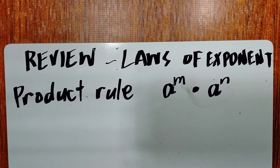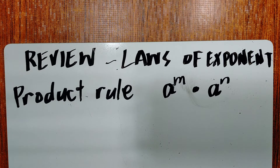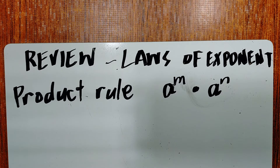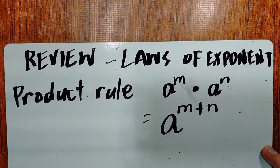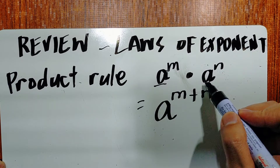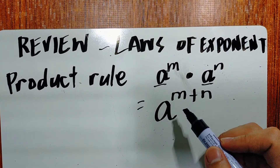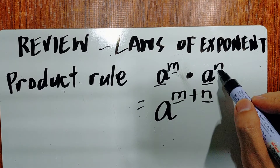Before we proceed with zero and negative exponents, let's have a review regarding laws of exponents. Let a and b be real numbers and m and n be any positive integers. The first rule we will discuss is the product rule. It says that a raised to m multiplied by a raised to n equals a raised to m plus n. We multiply the bases and add the exponents.